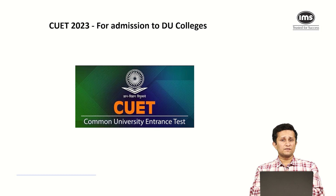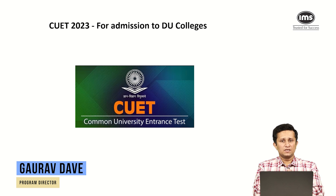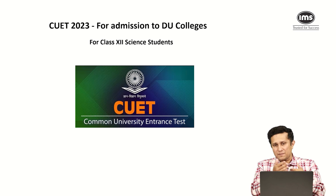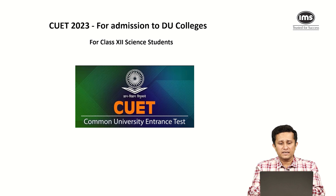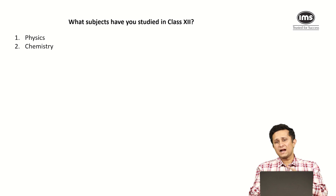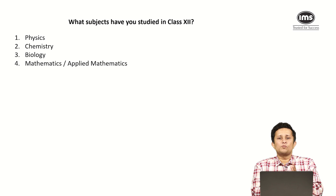Hi, my name is Gaurav Dave and in this video we will have a look at the kind of subjects a CUET aspirant aiming for DU should take if he is a science student — currently in class 12 doing science and aiming to go into DU. The subjects you would be studying right now would be physics, chemistry, and then either biology or mathematics. The most common combinations are either PCB or PCM.